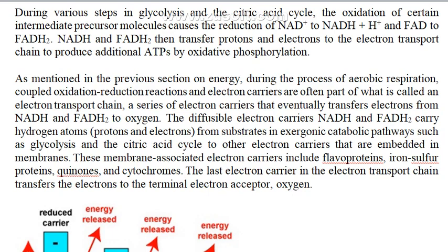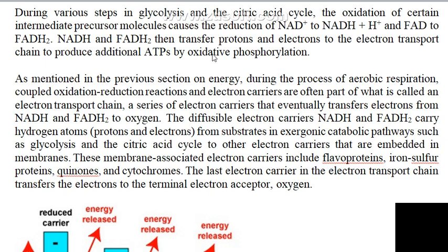Today we are going to see the comparison between the prokaryotic and mitochondrial electron transport chain. When the process of glycolysis or citric acid cycle takes place, you get intermediates in the form of NADH and FADH2. This NADH and FADH2 then transfers protons and electrons to the electron transport chain to produce additional ATPs by oxidative phosphorylation.